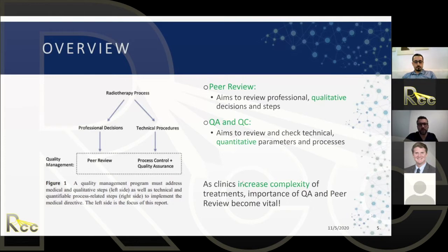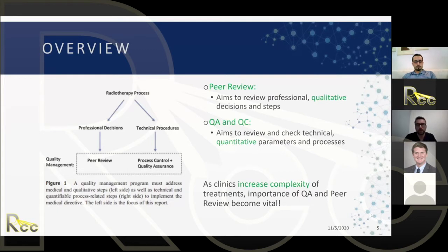As we move from 2D to 3D to IMRT and beyond, everyone is aware that machine tolerances need to be tighter — for example, isocenter accuracy for SRS. But that's not the only focus. There's a second leg: professional decisions. Peer review is just as important as treatments become more complex — reviewing contours, margins, and intent to treat are just as critical as ensuring the machine can deliver the treatment.